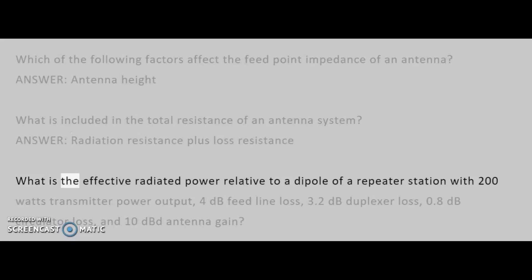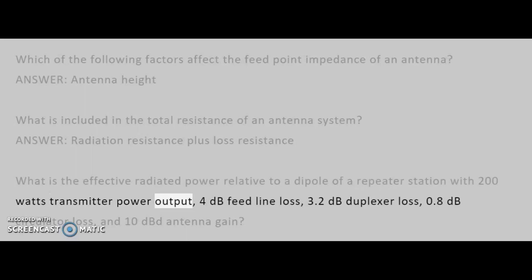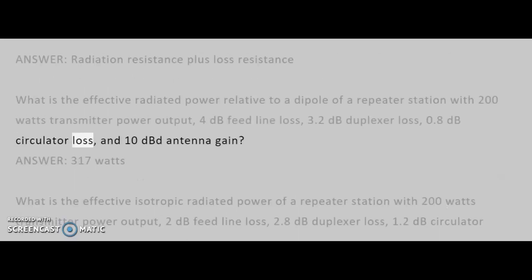What is the effective radiated power relative to a dipole of a repeater station with 200 watts transmitter power output, 4 dB feed line loss, 3.2 dB duplexer loss, 0.8 dB circulator loss, and 10 dBd antenna gain? Answer: 317 watts.